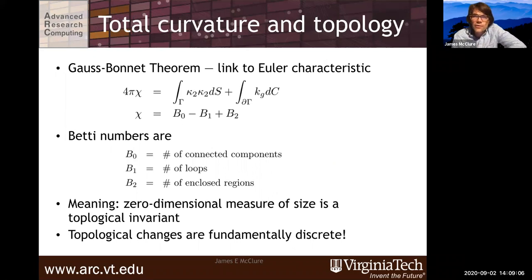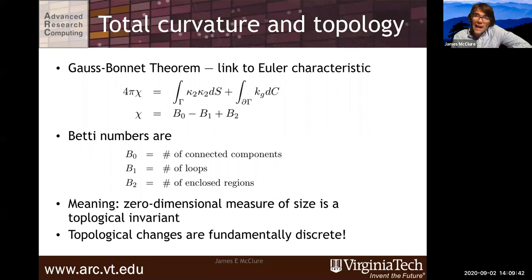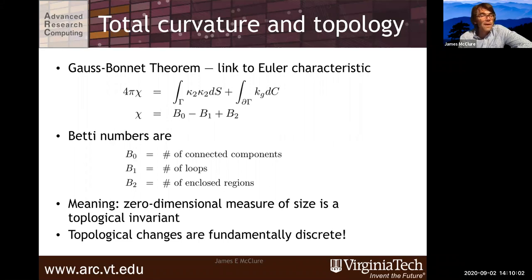Total curvature is particularly interesting because of its link to topology, which provides a way to measure how a structure is connected. You can derive the Gauss-Bonnet theorem, which links the total curvature of the boundary to the Euler characteristic, which is in turn linked to topological invariants known as the Betti numbers. The Betti numbers are: the number of connected components, the number of loops formed within the system, and the number of cavities enclosed within the structure. The zero-dimensional measure of size is a topological invariant, and topological changes are fundamentally discrete events.